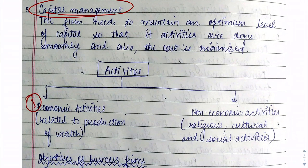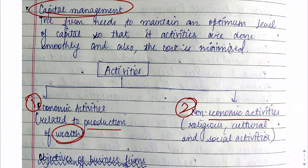In day-to-day life there are two types of activities: economic activities and non-economic activities. Economic activities produce wealth — if you do any work and receive money, it is an economic activity. Non-economic activities are motivated by love, religion, or culture — for example, a mother's love for her child is not done for money, so it is non-economic.